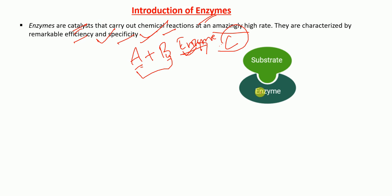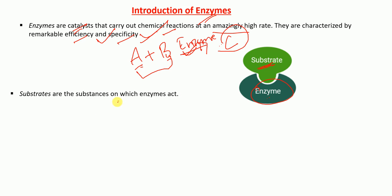Here we have an enzyme acting on a substrate. The substrate is the substance on which enzymes act. This particular compound acted upon by the enzyme is called the substrate of that enzyme.